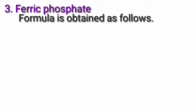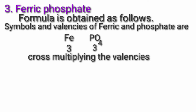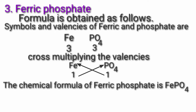Third, ferric phosphate. Formula is obtained as follows. Valency of Fe: 3, valency of PO4: 3. Dividing by common factor, we get 1, 1. Cross multiplying the valencies — Fe multiplied by 1, PO4 multiplied by 1. Therefore, the chemical formula of ferric phosphate is FePO4.